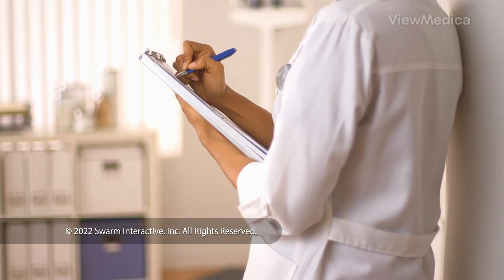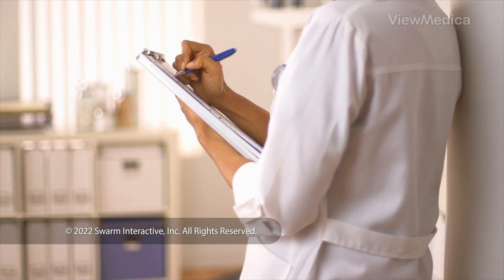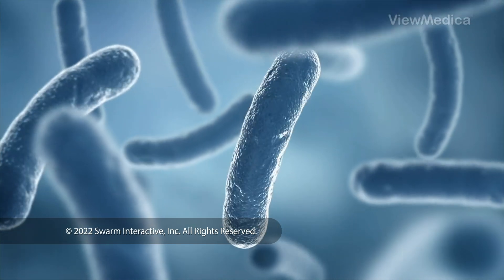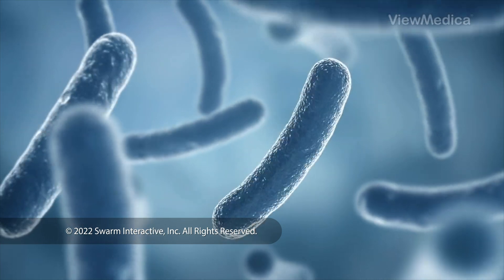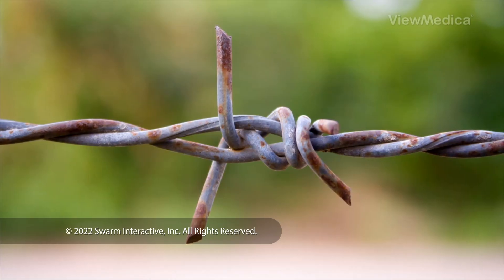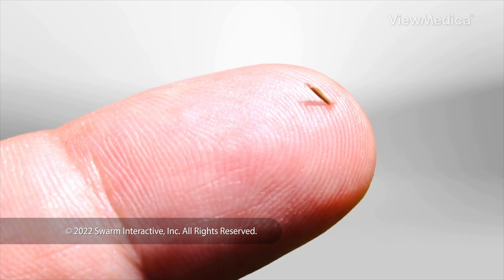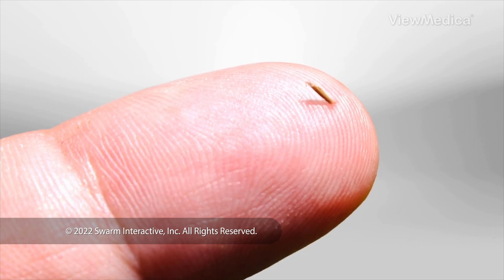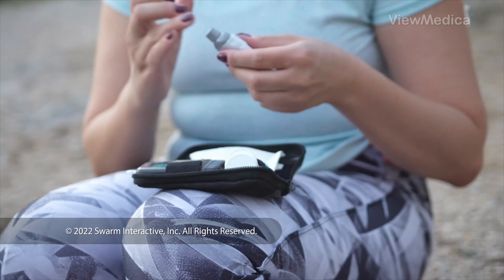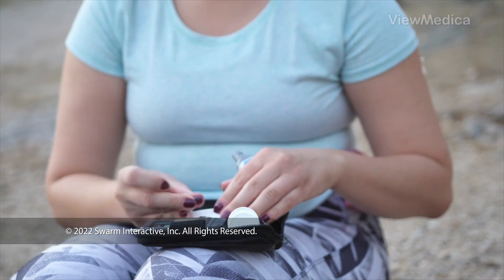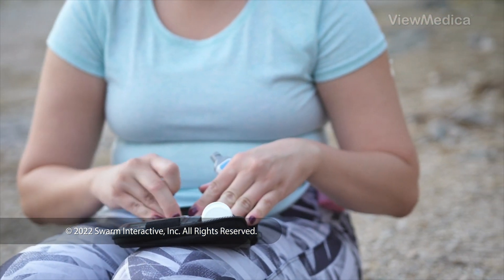What causes a felon? It happens when bacteria get through a break in your skin. Anything that punctures your fingertip can allow bacteria to get in. It can happen if you get a cut or a splinter, or if you are diabetic and routinely draw blood from your finger.